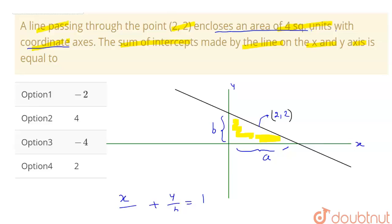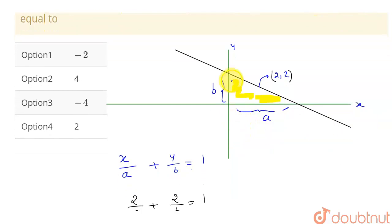So, see, what is the area of this triangle? This area of this triangle is delta equals half into base into height. See, this is my base a and this is my height. So, this will be half of ab in this area, and this is given to us as 4.